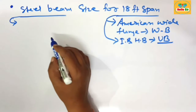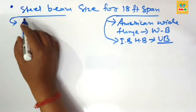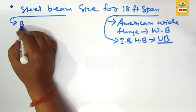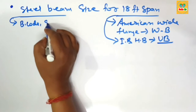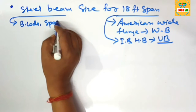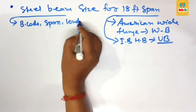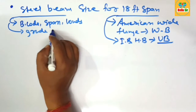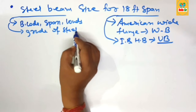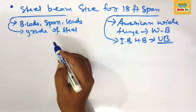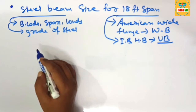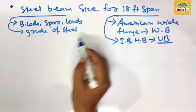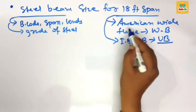The accurate size of steel beam depends on many factors like the building code in your area, the span between the supports, the load condition, and the grade of steel. These are the major factors which decide the accurate size of steel beam required for a specific span.